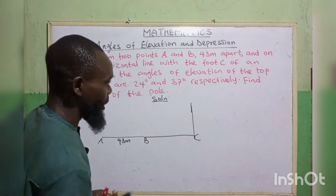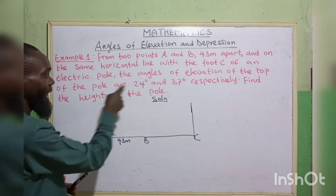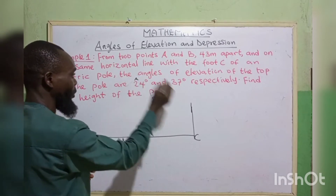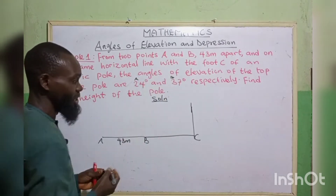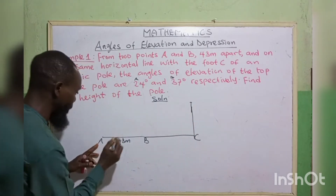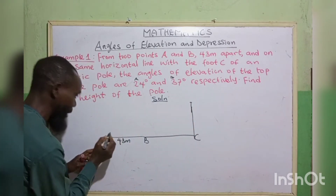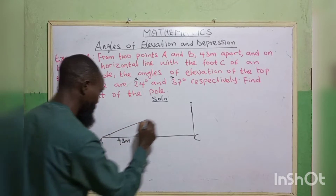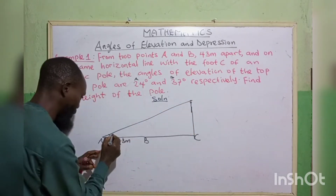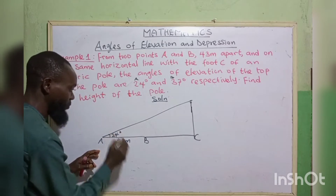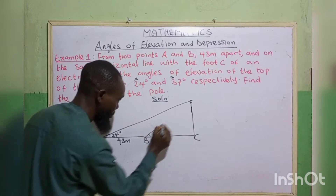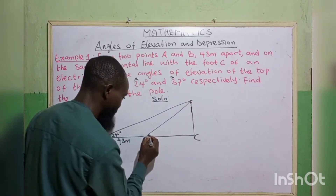The angles of elevation of the top of the pole are 24 degrees — that will be for point A — while 37 degrees will be for point B. So this is the top of the pole. For A, 24 degrees — elevation means the angle to look up — so 24 degrees. For B, it is 37 degrees.